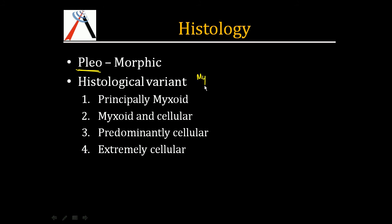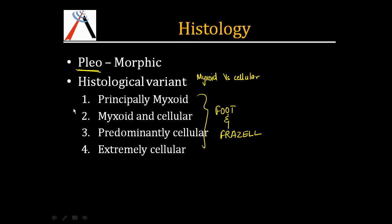Histologically, based on the content of myxoid and cellular tissue, pleomorphic adenoma is classified into four variants by Foote and Frazell. The first type has mostly myxoid tissue; the second has equal amounts of myxoid and cellular tissue; the third is predominantly cellular; and the fourth is extremely cellular.